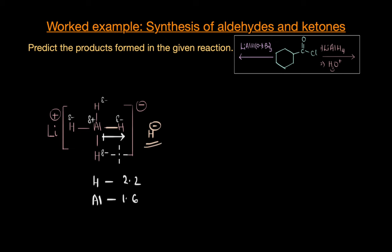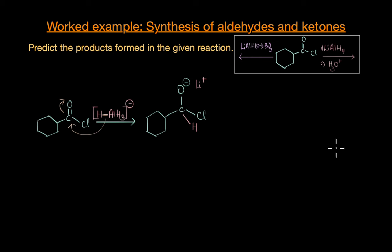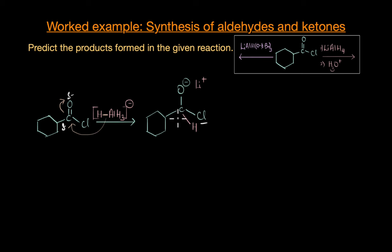Now that we have familiarized ourselves with the reducing agent lithium aluminium hydride, let's see what happens in this reaction. When the acid chloride reacts with lithium aluminium hydride, the hydride ion attacks the electron-deficient or electrophilic carbon atom and shifts the electron density of the pi bond towards the oxygen atom. We end up getting a tetrahedral intermediate. We can also notice that we have a very good leaving group here, which is the chlorine atom.